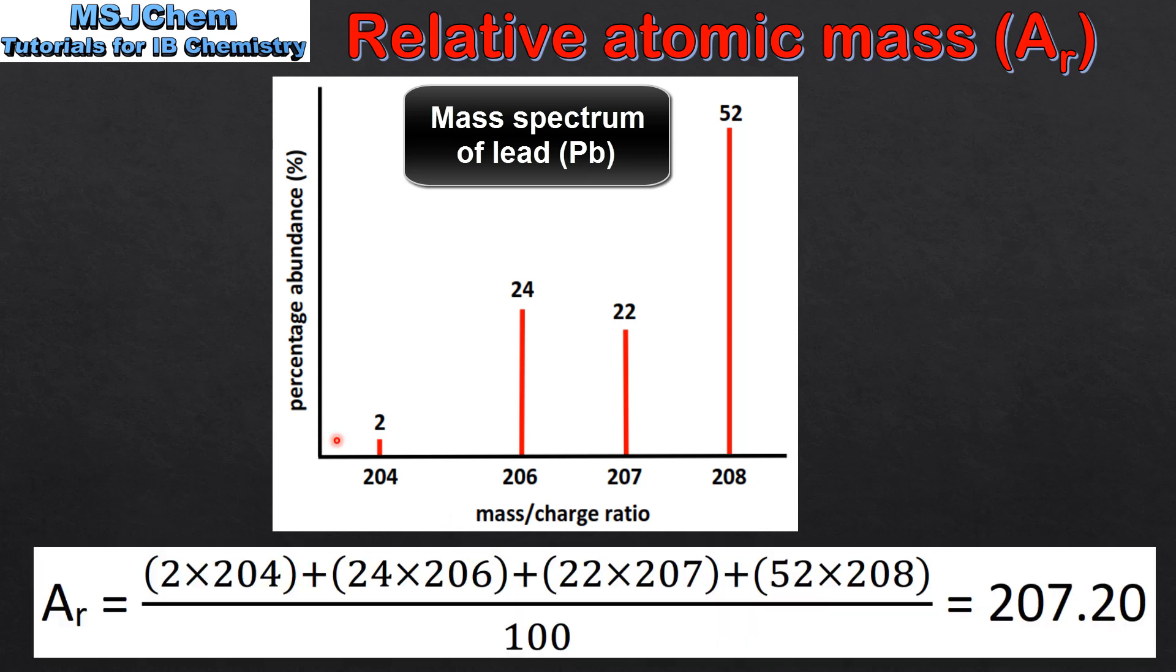To calculate the relative atomic mass we multiply the percentage abundance by the mass to charge ratio for each peak, add them together and divide by 100. So we have 2 times 204 plus 24 times 206 plus 22 times 207 plus 52 times 208. We then divide by 100 which gives us a relative atomic mass of 207.20.